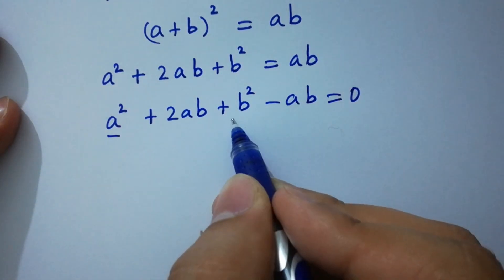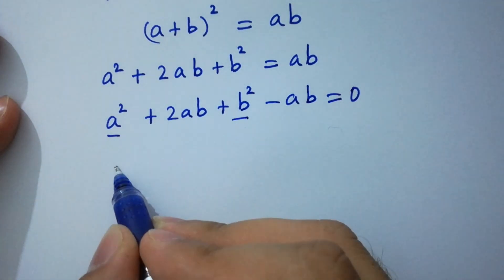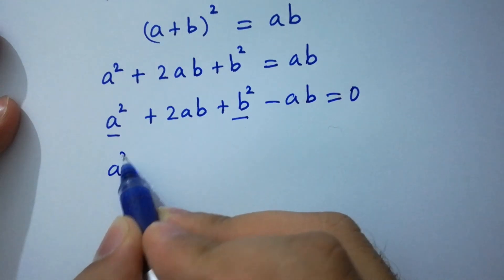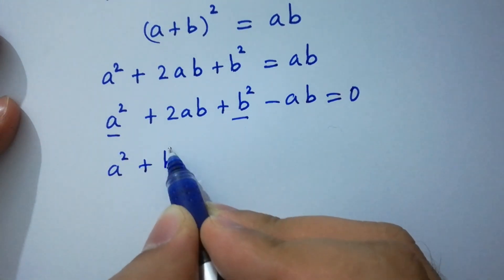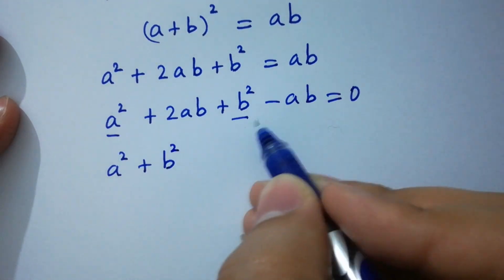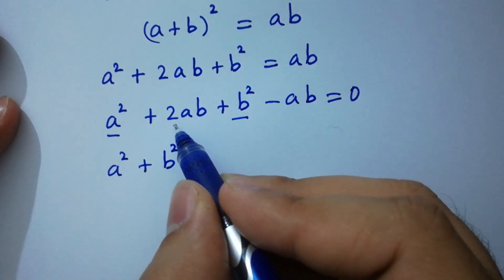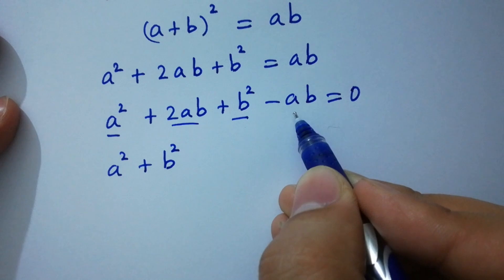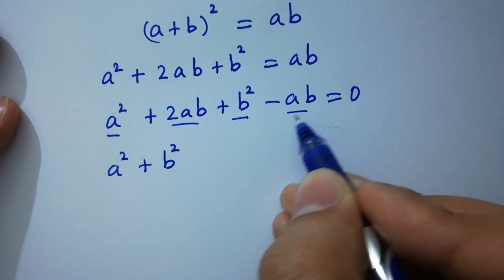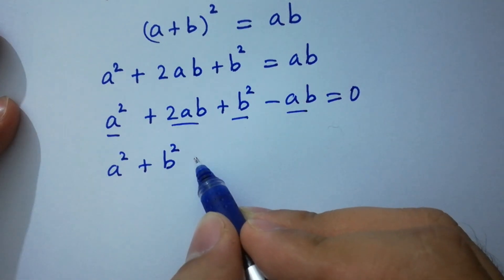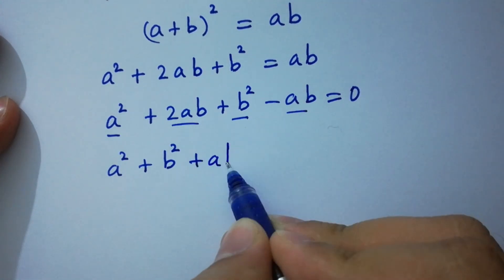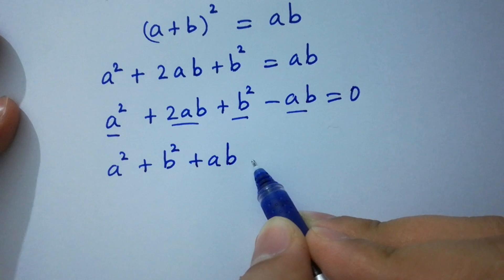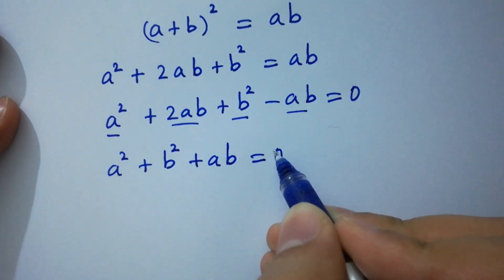Rearranging, a squared plus 2ab plus b squared minus ab equals 0.